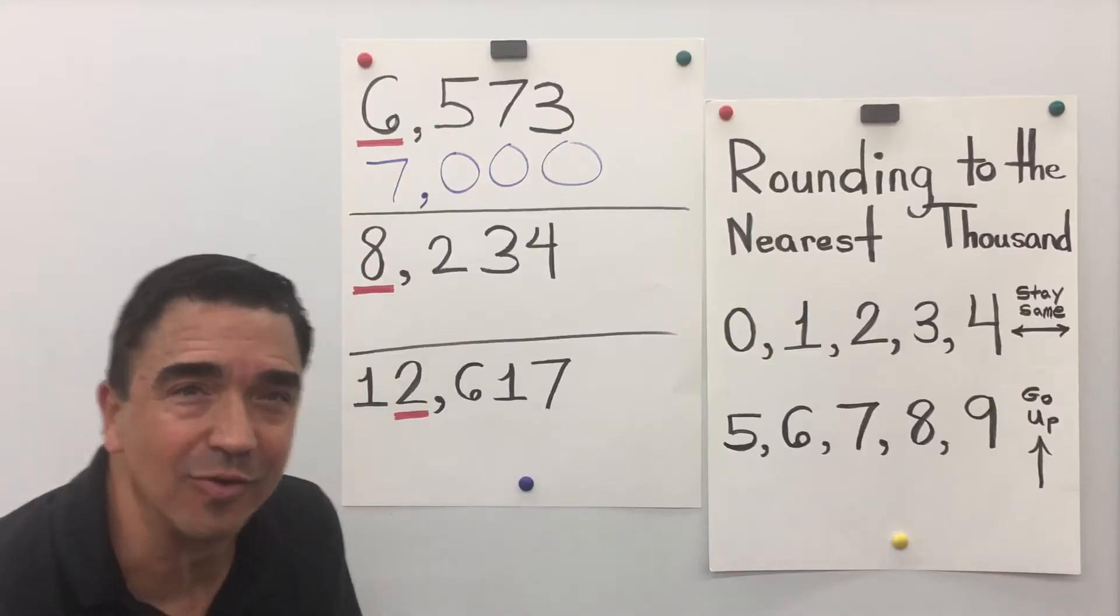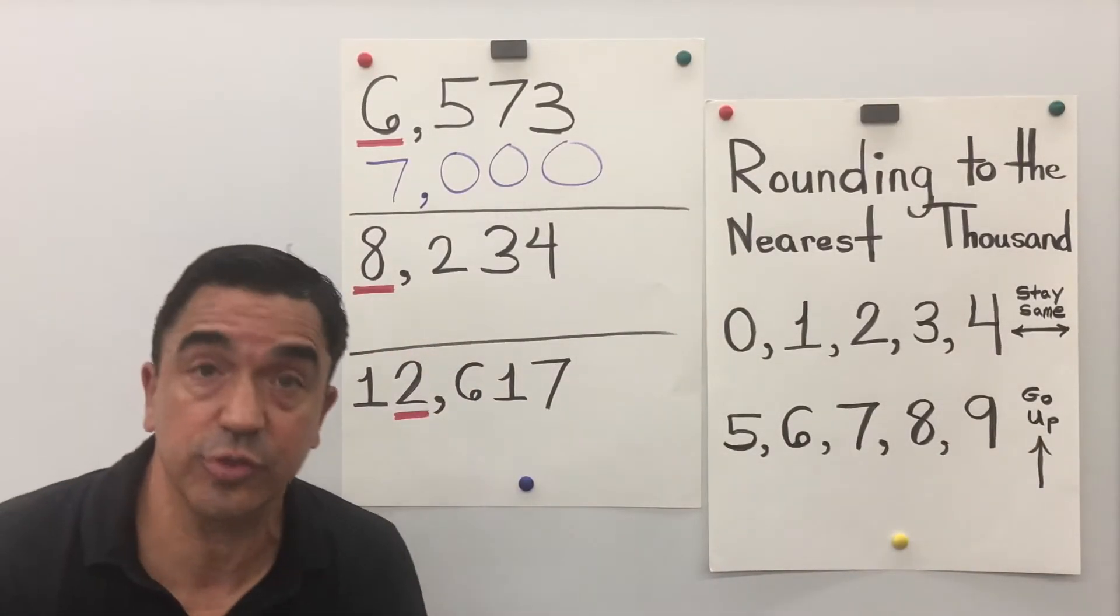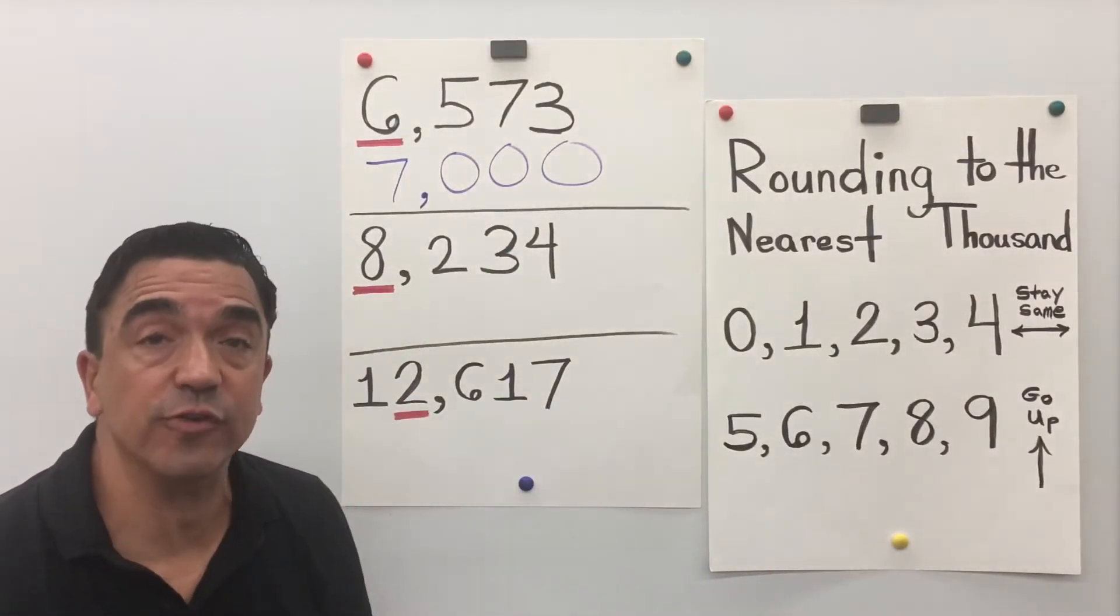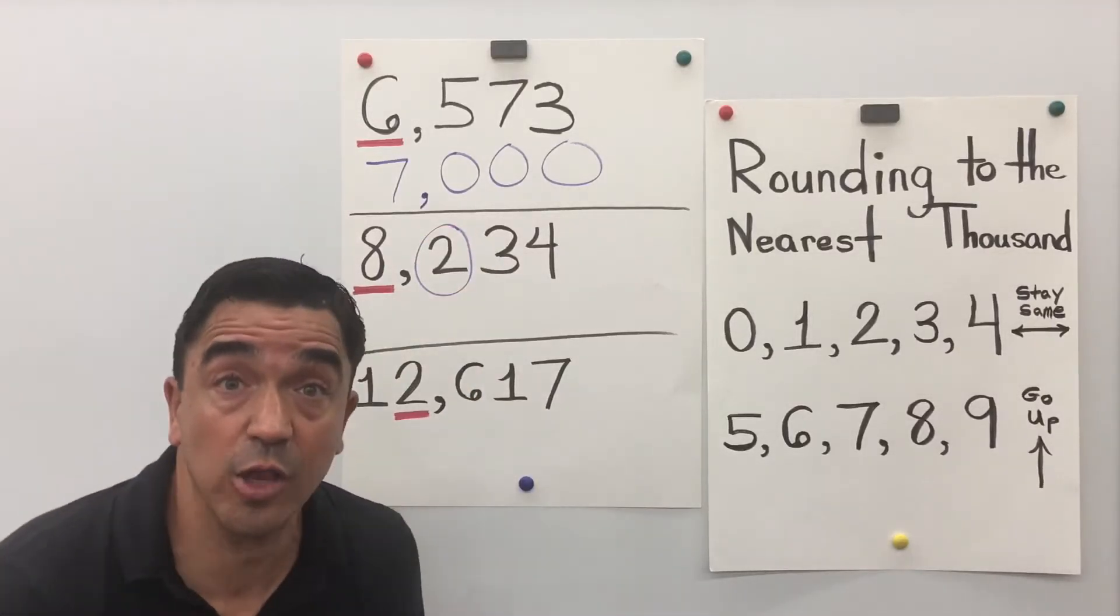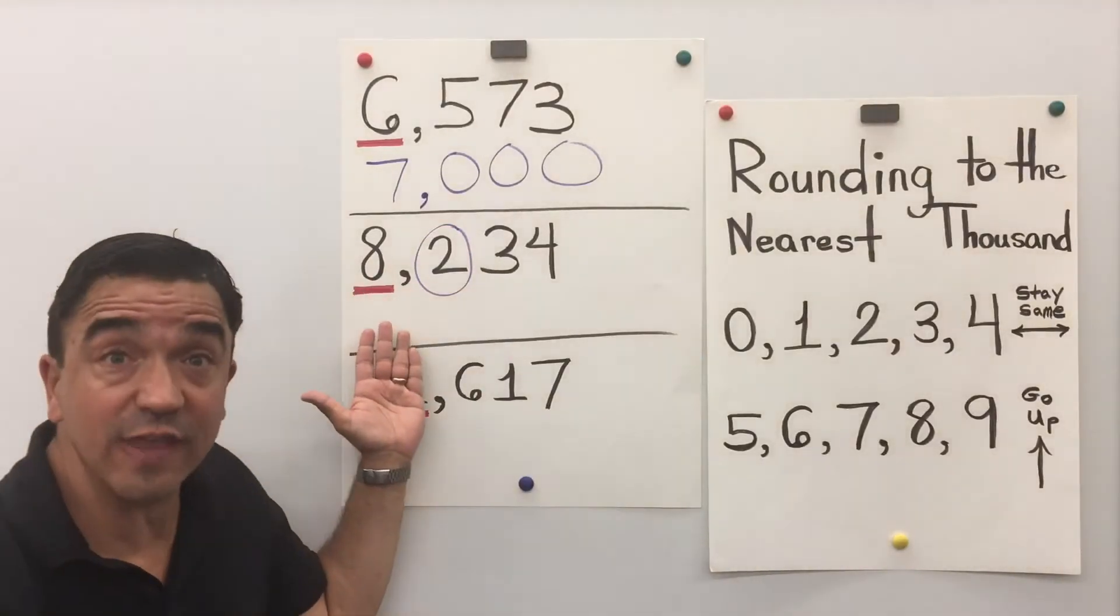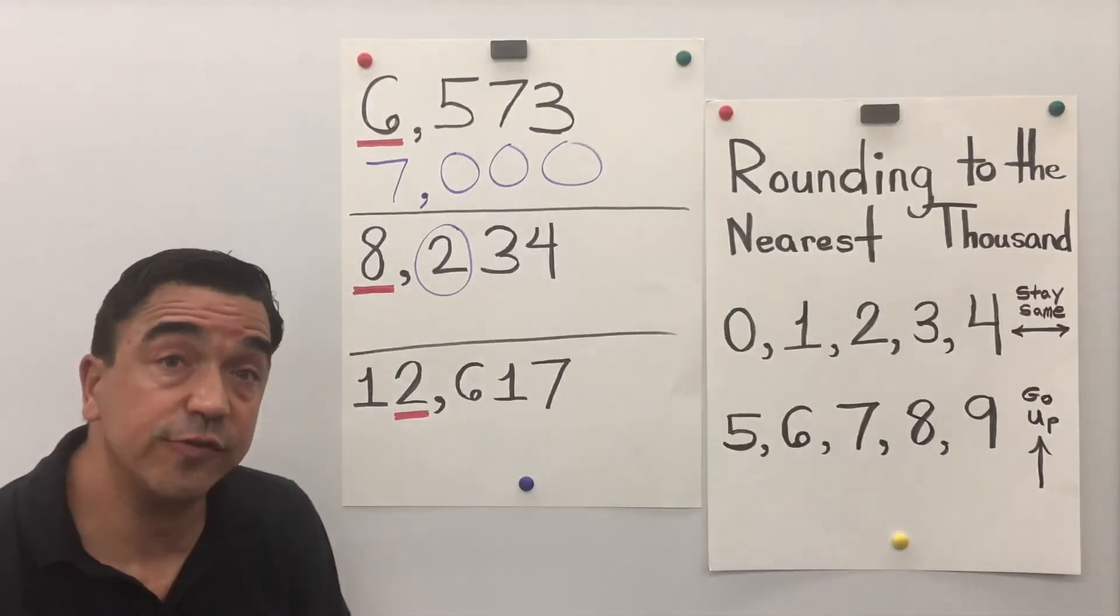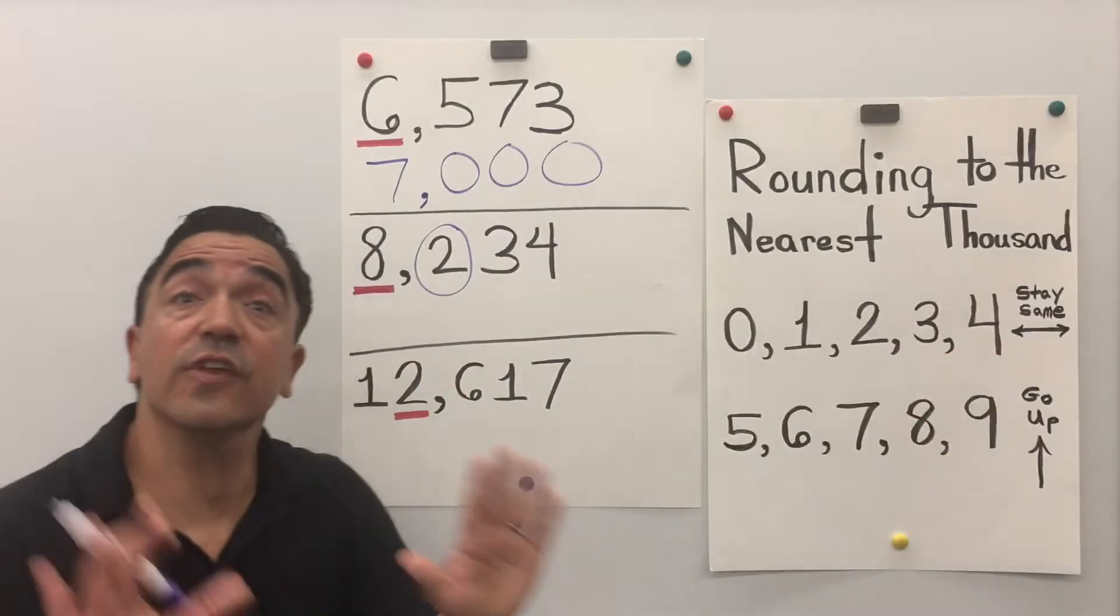Let's look at problem number two. The number is 8,234. The 8 is in the thousands place. The 2 in the hundreds place is going to tell the 8 what to do. The 2 is going to tell the 8 to stay the same.